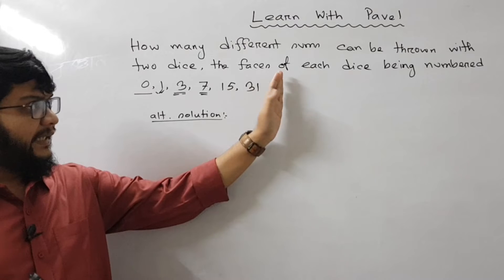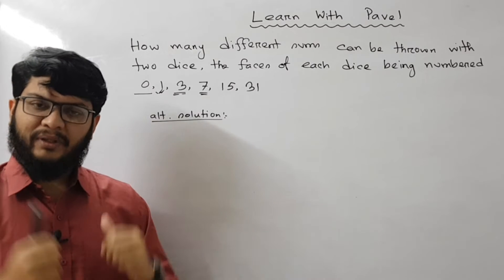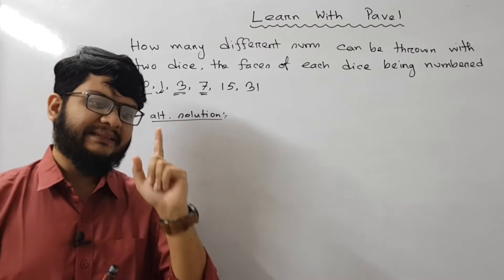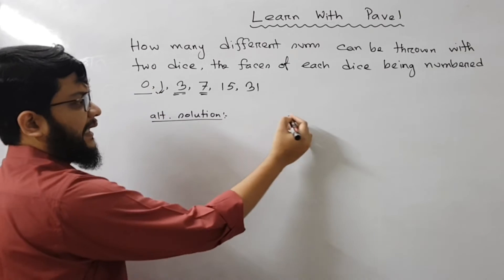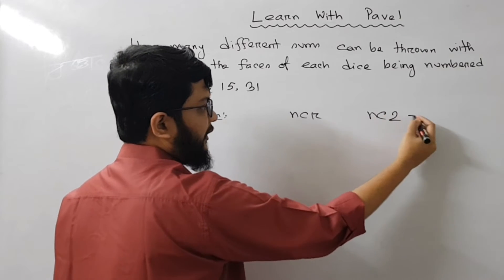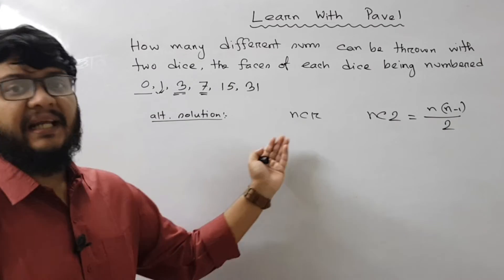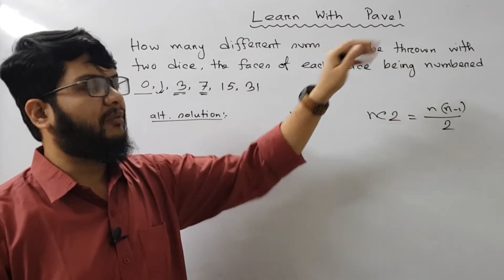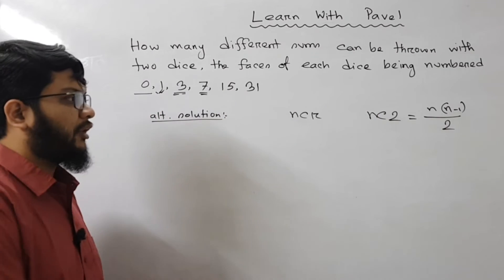We will have the second solution. The first solution has already been explained, as you can see. Now, the second solution uses the concept of combinations. As you can see, the combination NCR is the formula. Specifically, you can see the NC2 value. NC2 is equal to N into N minus 1 divided by 2. If you don't know this topic of NCR and NPR, you can see that in our YouTube channel.